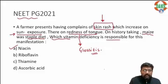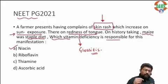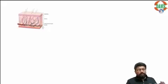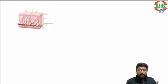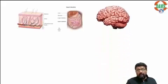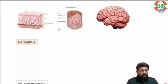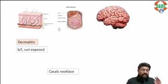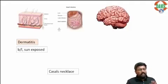This is again niacin. Niacin deficiency causes pellagra — a very important topic for PG and FMG. Niacin is required for proper functioning of your skin, intestine, and brain. If niacin is deficient, the patient may get dermatitis, which is bilateral and more prominent over sun-exposed areas. The classical sign here is Casal's necklace.